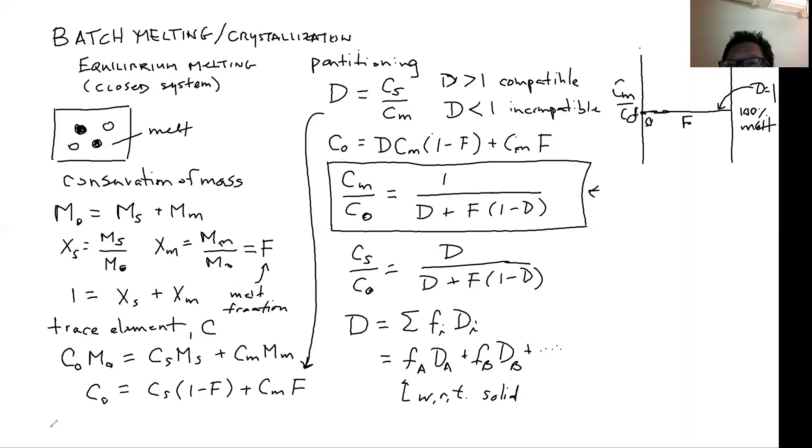When d is less than 1, the element is incompatible. And so with progressive crystallization, it should become more and more enriched in the melt. And if d is greater than 1, so d less than 1 would be here. And d greater than 1 obviously would be here. The melt would become depleted with progressive crystallization because the crystals keep taking away that compatible element. Now we can look at when the case f equals 1 in this same equation. When f equals 1, then this quantity becomes 1 as well. That means when you melt it 100%, you should get to the bulk composition. But all of these curves should converge to 1 at f equals 1.